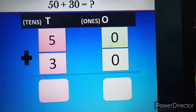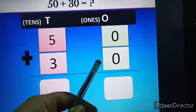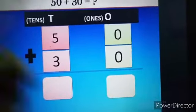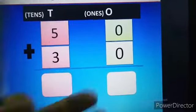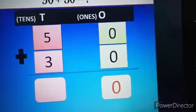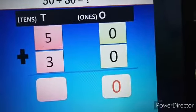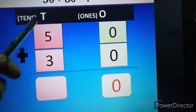So children as we know that first we have to add this ones place. So let us add. See children here 0 plus 0. 0 means nothing. So your answer will be 0. No need of drawing lines.